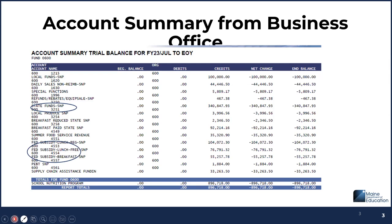This is just one example of a district's revenue accounting summary. Please note that the revenue is broken down by each program. Any federal money received must start with a four — I've circled those. It says subsidy, lunch, free, S&P. And then there's breakfast, reduced state, and you have the state to let you know that those are state funds, which start with a three.